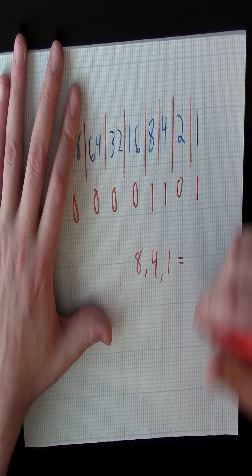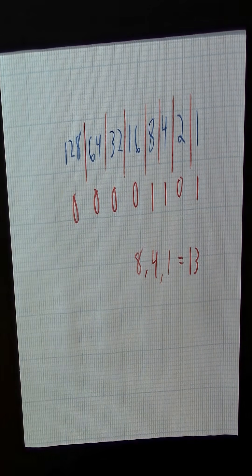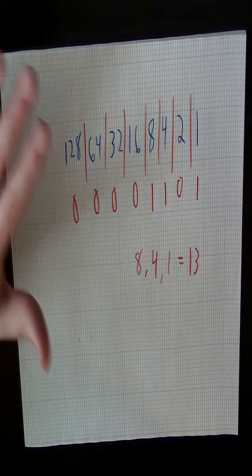Eight, four, one equals 13. It's all addition, so it's fairly simple to do all this.